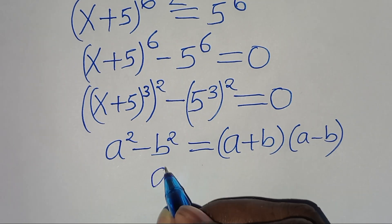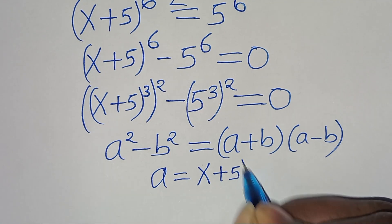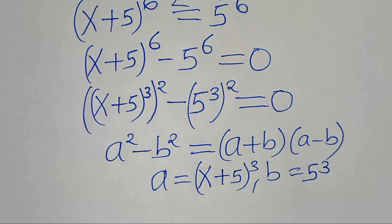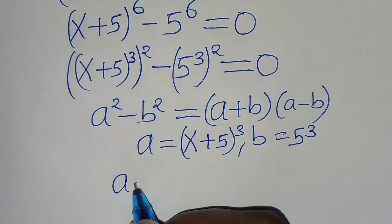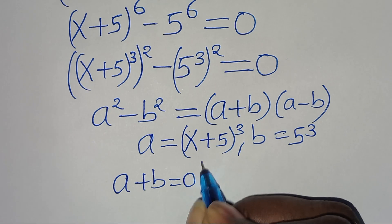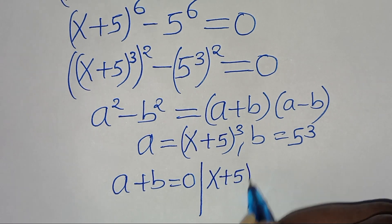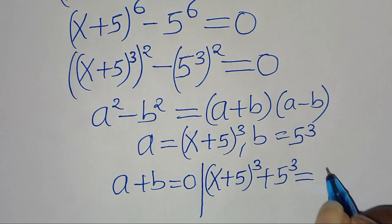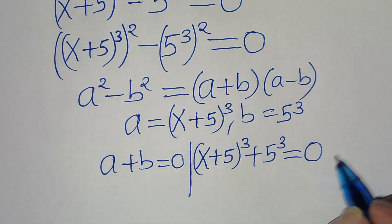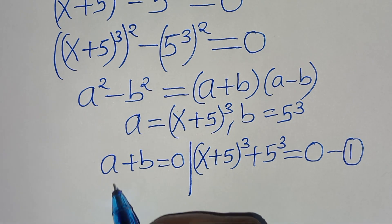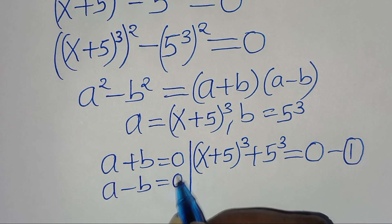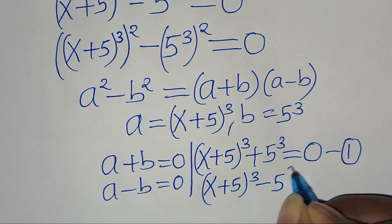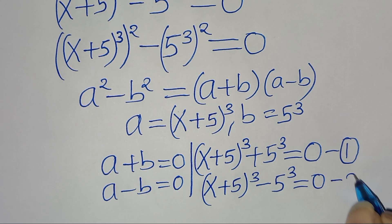This implies that a equals x plus 5 raised to the power of 3, and b equals 5 to the power of 3. So we get: x plus 5 raised to the power of 3, plus 5 to the power of 3, equal to 0 — call this equation 1. And x plus 5 raised to the power of 3, subtract 5 to the power of 3, equal to 0 — call this equation 2.